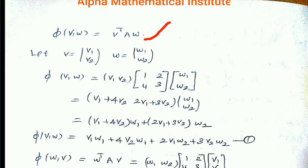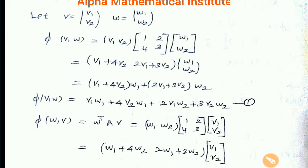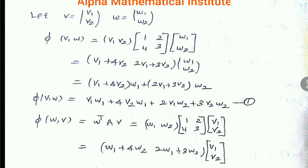This is the definition of φ. So let us take two elements from R2 as vectors: V equals (V1, V2) and W equals (W1, W2). Now let us calculate φ(V, W). φ(V, W) equals V transpose — that is the row vector V1, V2 — times A, which is 1, 2, 4, 3, times W, which is the column vector W1, W2.